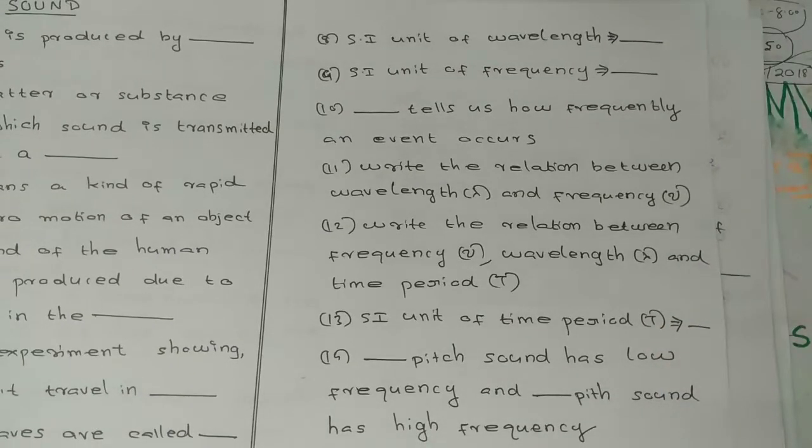Q9: The unit of frequency is equal to dash. Q10: Dash tells us how frequently an event occurs.